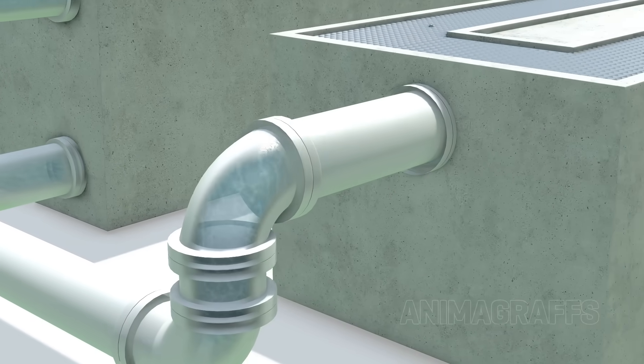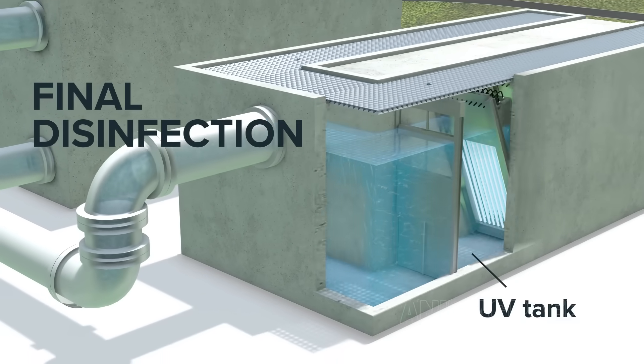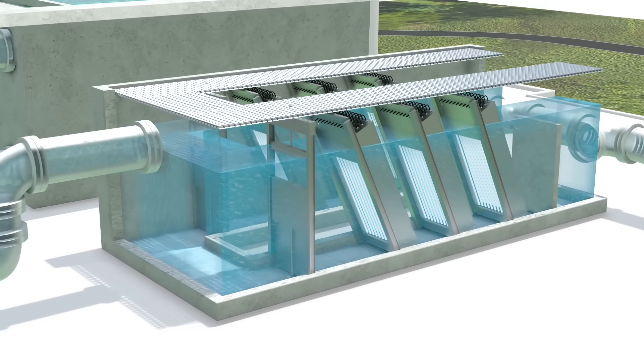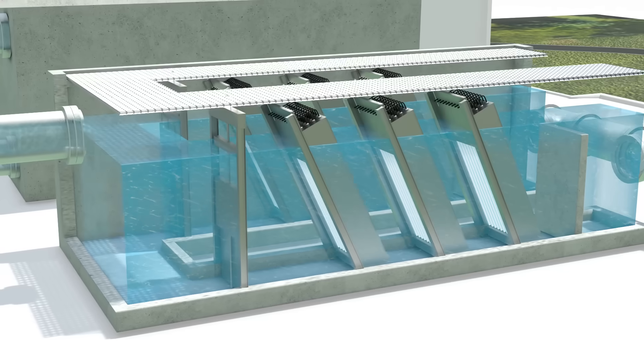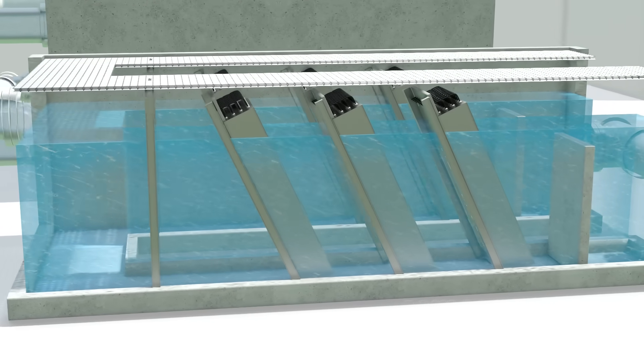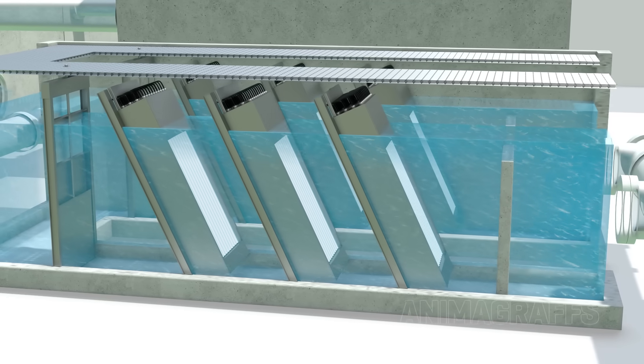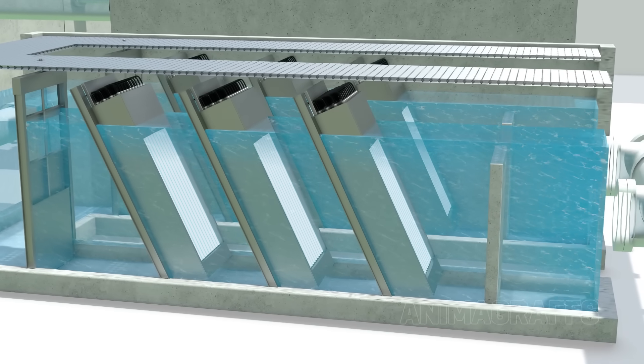The filtered water flows to final disinfection in the UV tank. Water passes through banks of ultraviolet lights. UV light at various wavelengths can destroy or disrupt viral, bacterial, and other pathogens' DNA or cellular structure, effectively destroying them.